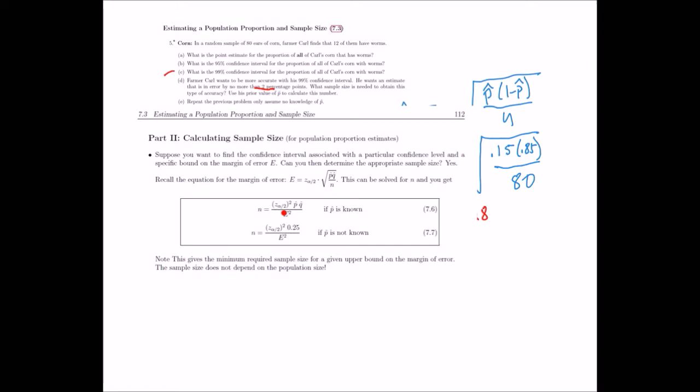Everything else is the same except we're going to get slightly different numbers. The sample size is huge. In the numerator, I'm getting 1.6577, and if we divide that by 0.0004, I'm getting a sample size of 4,145 because I'm going to round up. Okay, so that's how you do this kind of problem.